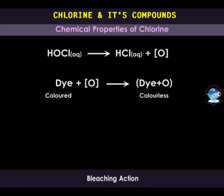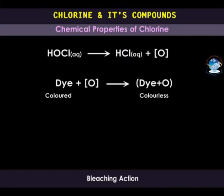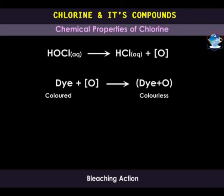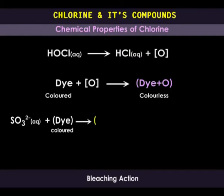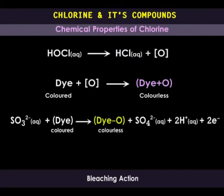In the absence of water, hypochlorous acid is not formed, and this explains why we use wet litmus paper. Moist chlorine will bleach many materials like writing ink, but it will not bleach printing ink, which is made of carbon — and recall that chlorine does not react with carbon. The bleaching action of chlorine is different from that of sulfur dioxide. Whereas chlorine bleaches dyes through the addition of an atom of oxygen, sulfur dioxide bleaches dyes through the removal of an oxygen atom. In other words, chlorine bleaches dyes by oxidizing them, while sulfur dioxide bleaches dyes by reducing them.